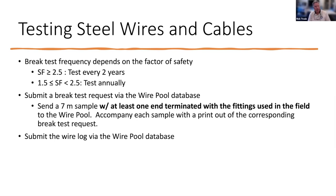In addition to getting the sample — which needs to be well identified — we want to make sure we know exactly where that sample came from. The sample should have the NSF number or OTH number, and we ask that you send a copy of the break test request with the sample to keep everything straight. Appendix A also says you should submit a wire log, which you can do via the wire pool database by uploading it. I take a look at it, and if it looks correct I approve it, and then it goes on to the page for that particular tension member.